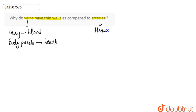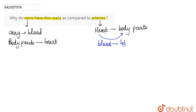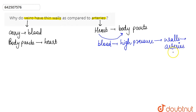Arteries, on the other hand, carry blood from the heart to all the body parts. For the blood to be carried to all the body parts, it has to flow at high pressure. Because high pressure is exerted on the walls of the arteries by the blood, the walls of the arteries are made thick to protect them from bursting.